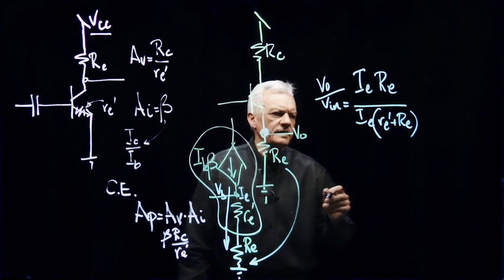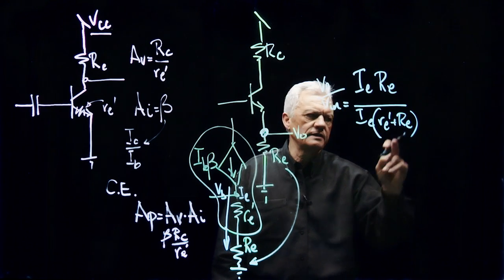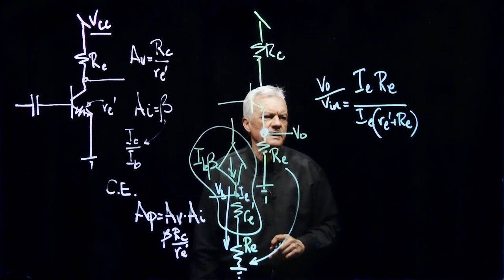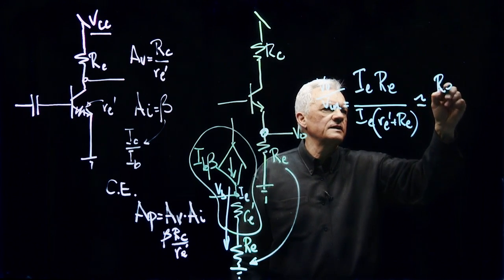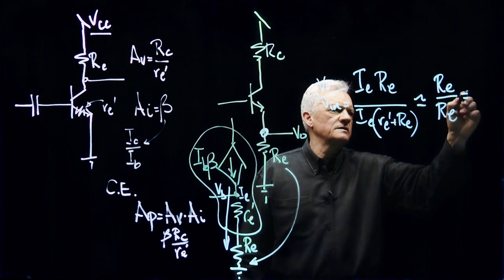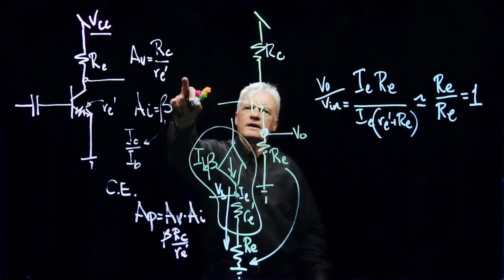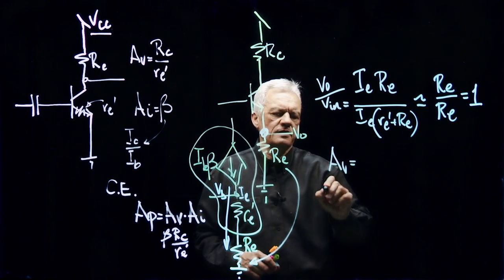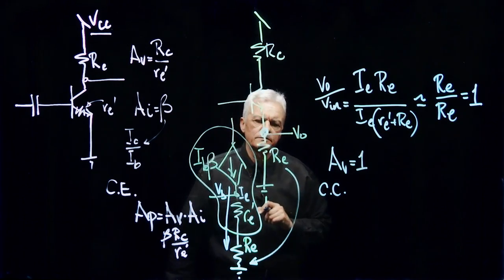Now, given that Re is pretty small compared to Re subprime, it's small compared to Re, this may be on the order of 10K, this may be on the order of 10 ohms, a greatly out ratioed resistance, what we effectively have is Re over Re, which is one. How is that? We had a gain of Rc over Re prime here, but the gain for the common collector amplifier is one for voltage.